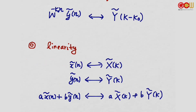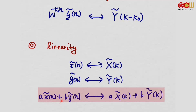We also have linearity. If X-tilde[n] ↔ X-tilde[K] is a DFS pair, and Y-tilde[n] ↔ Y-tilde[K] is another pair, then a linear combination of X-tilde[n] and Y-tilde[n] in the time domain leads to the same linear combination of X-tilde[K] and Y-tilde[K] as the DFS coefficient.